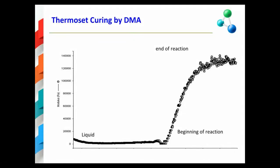In the beginning of the experiment, which is indicative of the material being in a liquid state. Then, starting at about 140 degrees centigrade, which I have indicated on this slide at the beginning of the reaction, E prime abruptly begins to increase and it reaches a plateau value at about 180 degrees centigrade, corresponding to the end of the reaction on this particular slide.